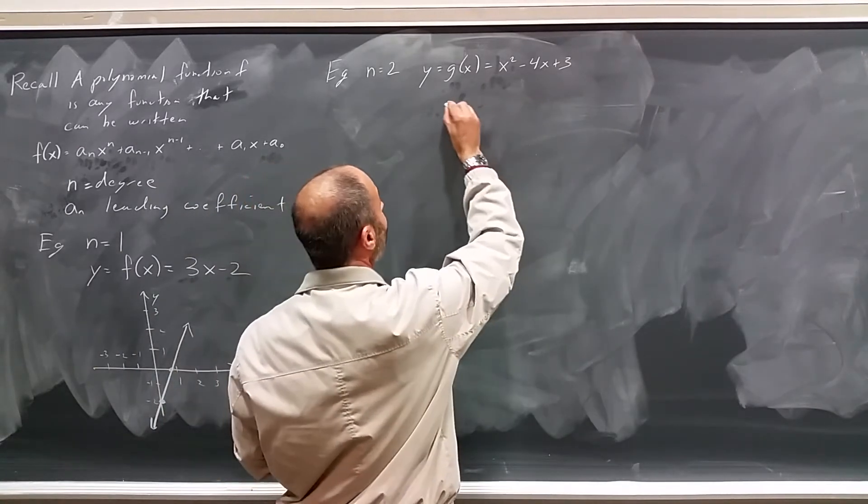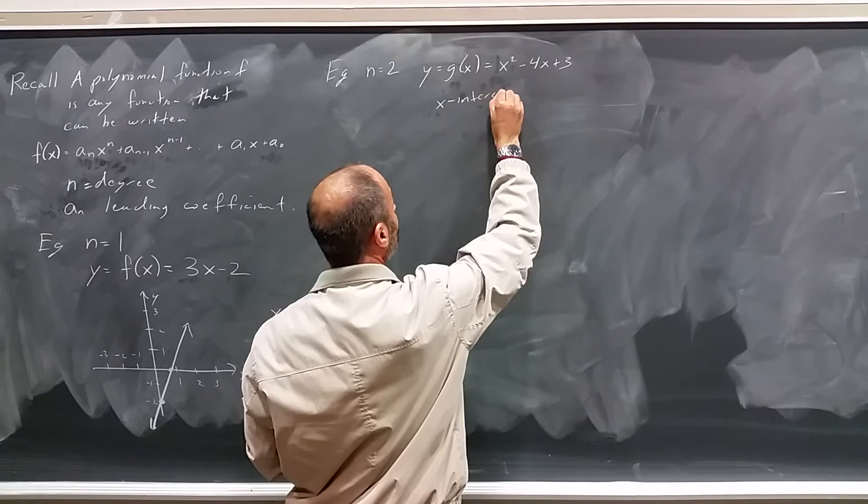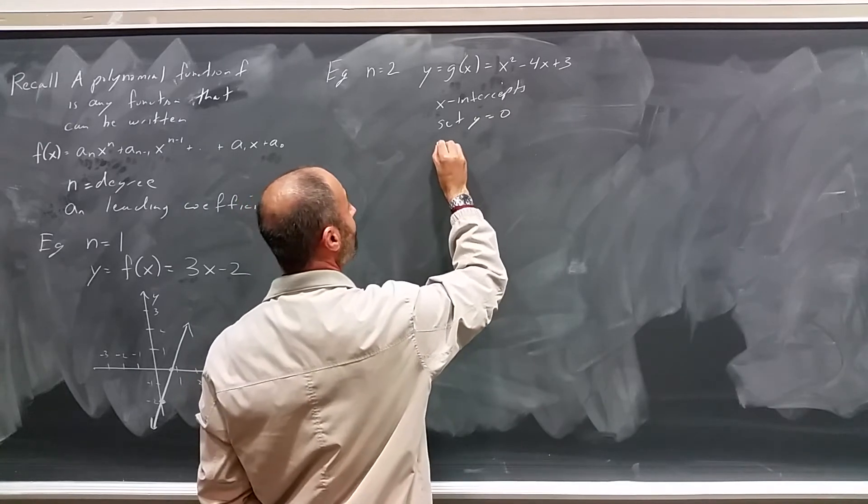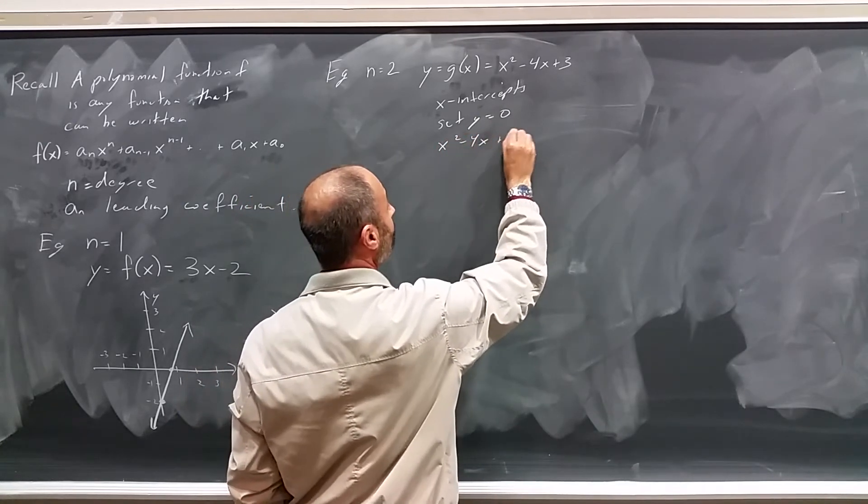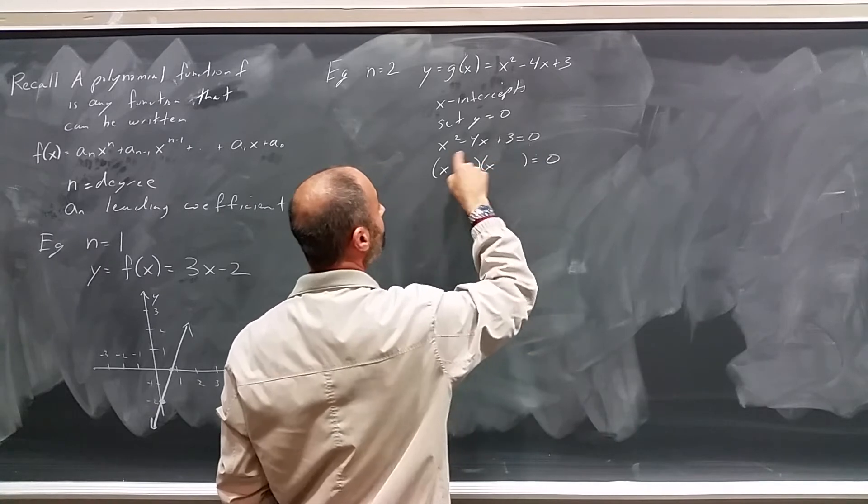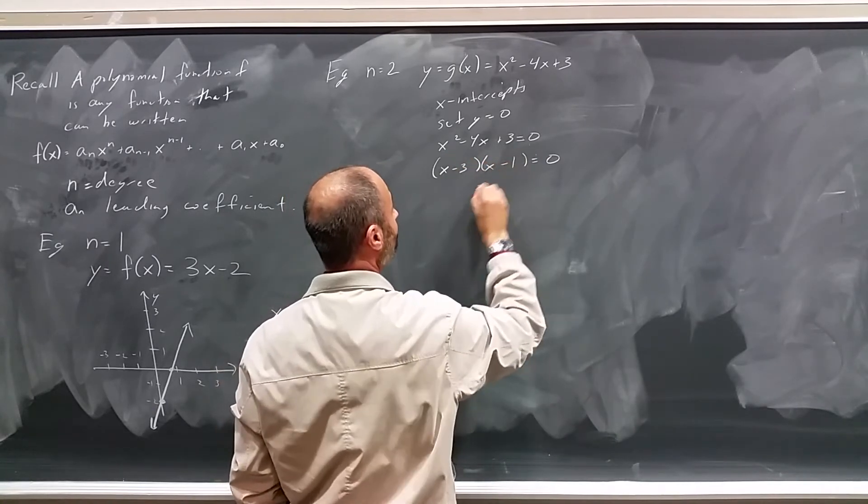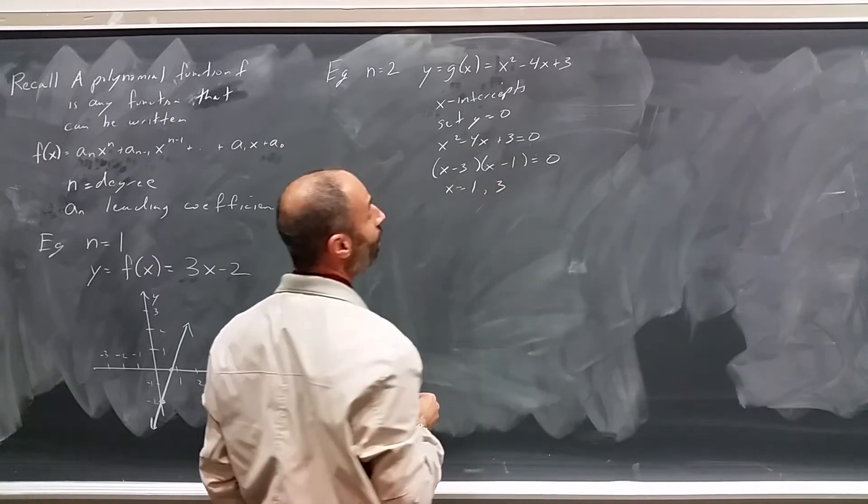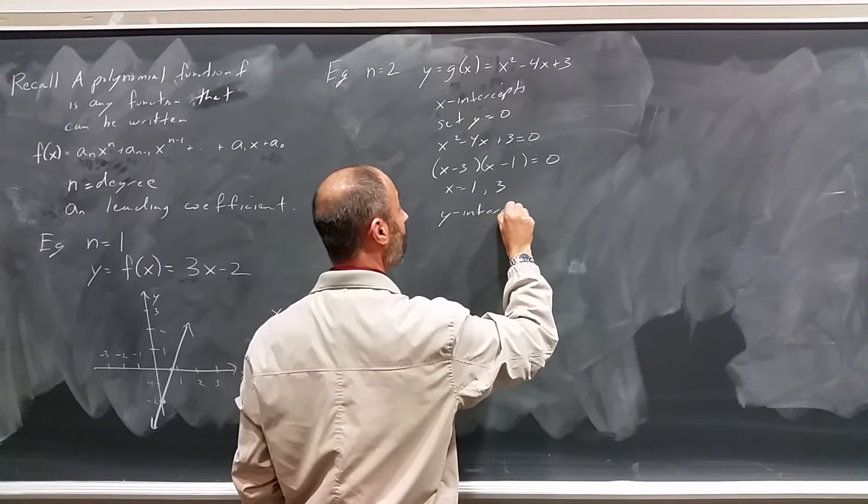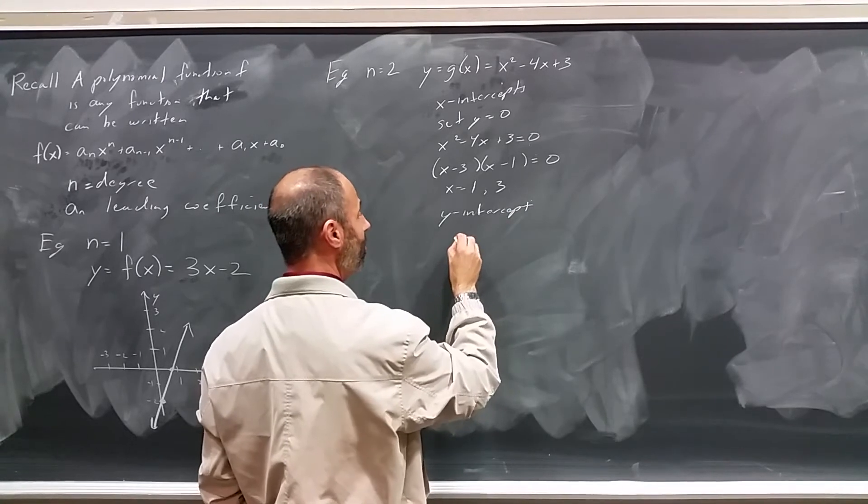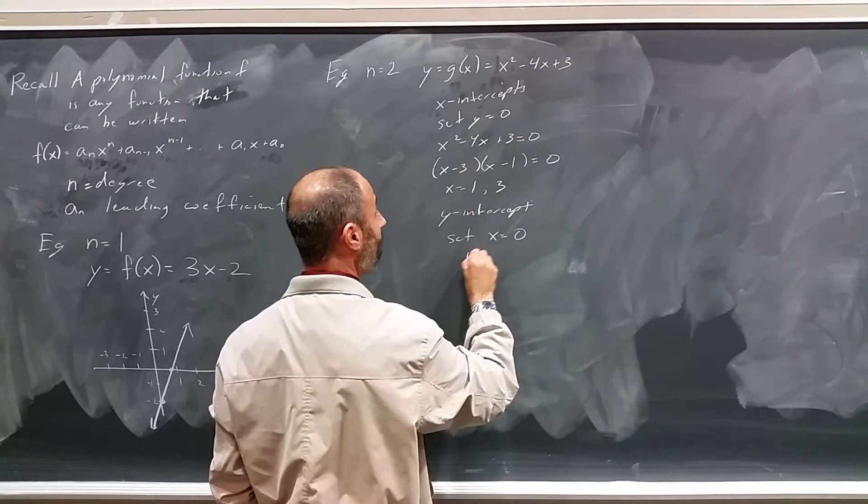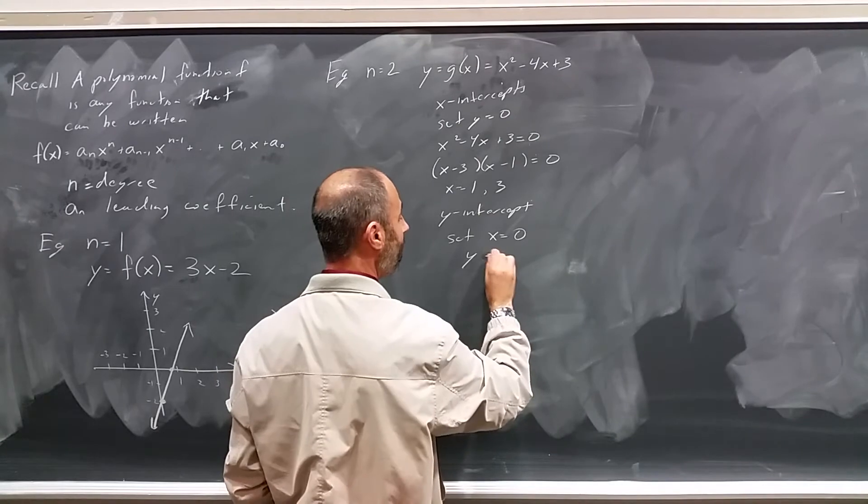We can find the x-intercepts, again, by setting y equals 0. And if we do that, we end up with x² minus 4x plus 3 equals 0. So we have (x minus 3)(x minus 1), so x equals 1 or 3. We can also figure out the y-intercept by setting x equal to 0, in which case we end up with y equals 0 minus 0 plus 3 or y equals 3.